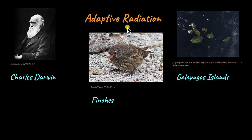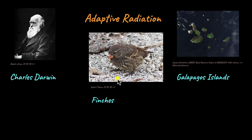That led to the proposition of the idea known as adaptive radiation. What is adaptive radiation and how did these finches help in figuring out adaptive radiation? That's what we are going to learn in today's video. These finches are now called Darwin's finches in honour of Charles Darwin.